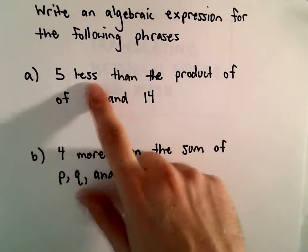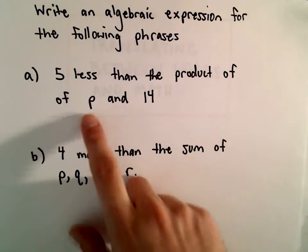In part A, we have 5 less than the product of P and 14.